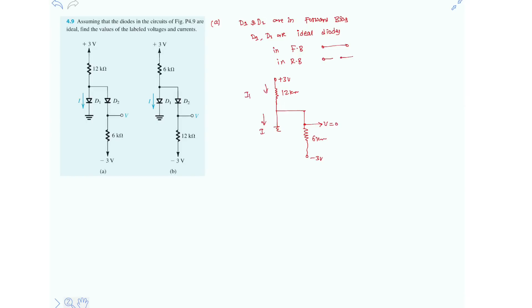This is I-12, this is I-6. I-12 is simply 3 minus 0 over 12kΩ resistor, that is 0.25mA current. And I-6 flowing downwards direction through 6kΩ resistor is 0 minus of minus 3V over 6kΩ resistor, that is 0.5mA.